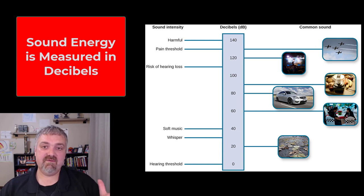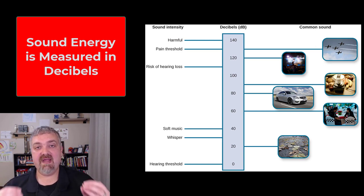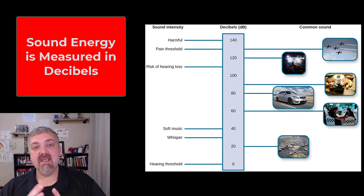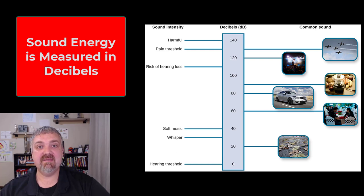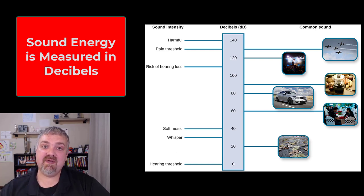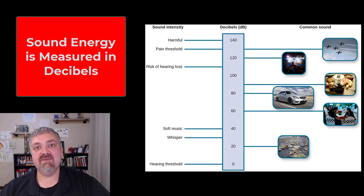To review: the brain receives pitch information by which part of the cochlea is being stimulated, and it determines loudness by how much of that cochlear area is stimulated. That is hearing — a complex but pretty awesome process. Hope this helps, have a wonderful day!